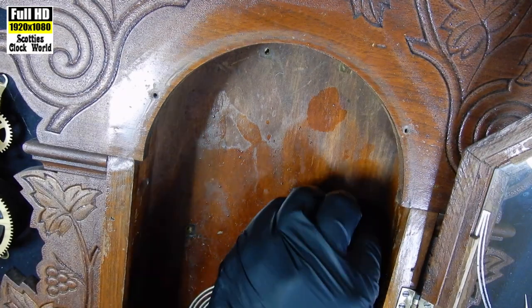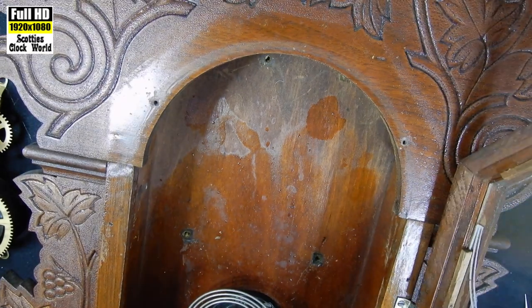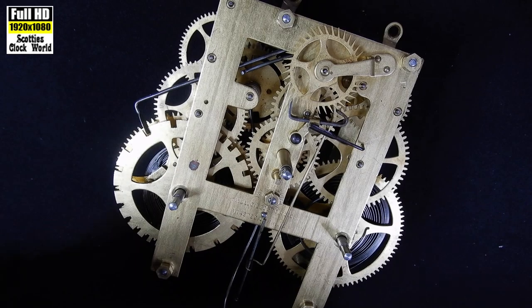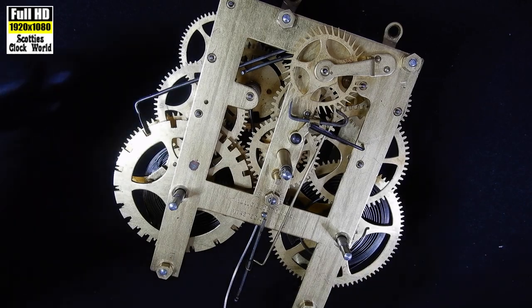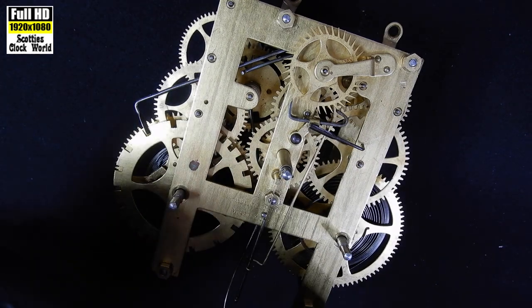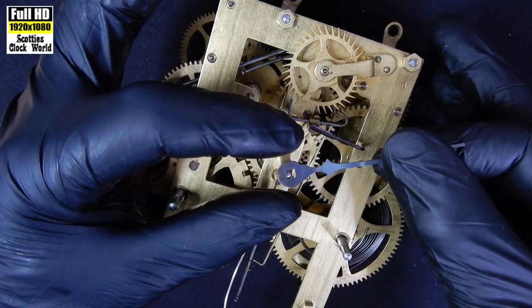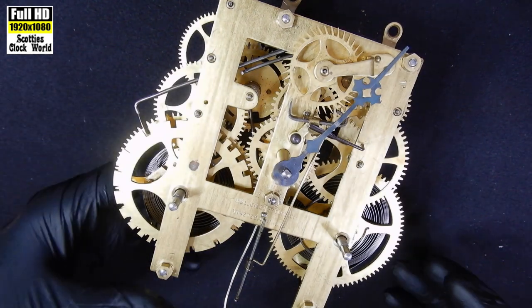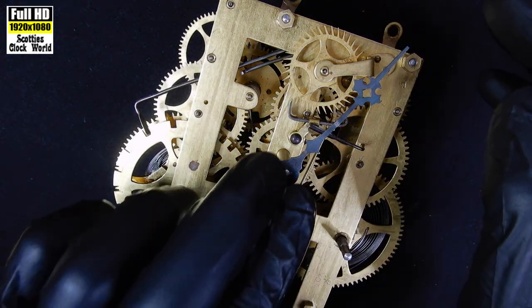Now we'll remove the case. We won't worry about taking the gong out. We'll let that stay there. First thing we do before we take a movement apart is we check it to see if there's any obvious problems with it. To do that.